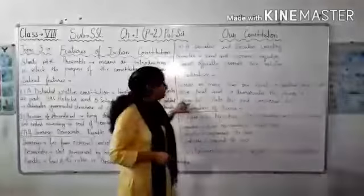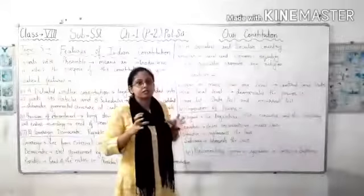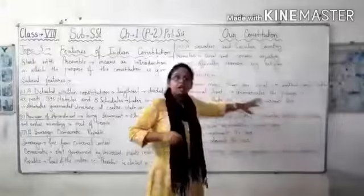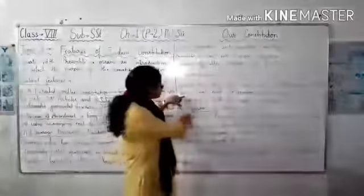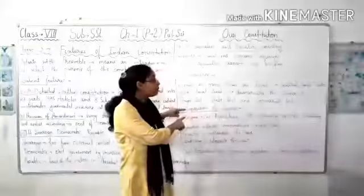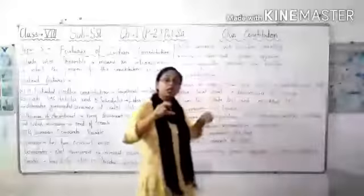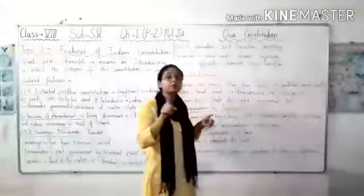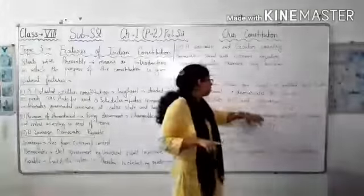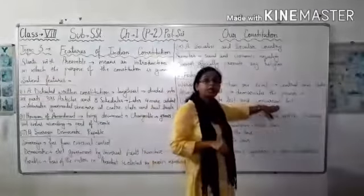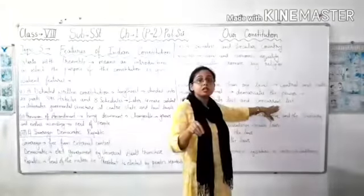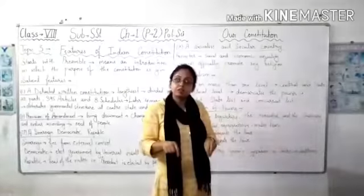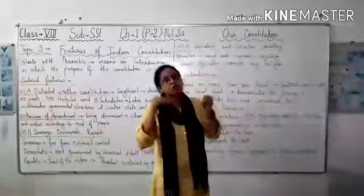The responsibilities and duties are divided in these three lists. Whatever subjects are given under the union list will be taken care of by the centre. Whatever subjects are given in the state list will be taken care of by the state. Whatever subjects are given under the concurrent list will be taken care of together by the centre and state — they have to work together on those subjects.